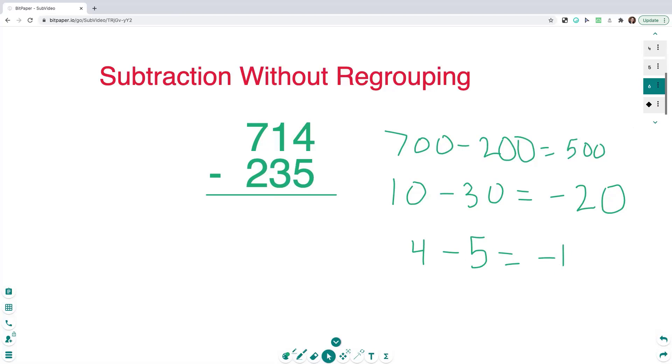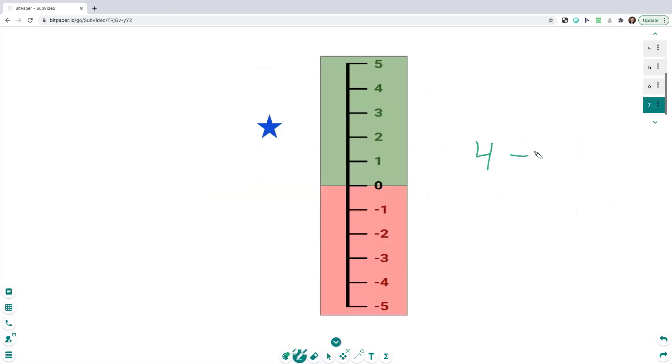And I have a number line here that I can demonstrate 4 minus 5. And so I'm starting at a positive 4 on the vertical number line. I'm going to go down 5 spots. 1, 2, 3, 4, 5, ending at negative 1.